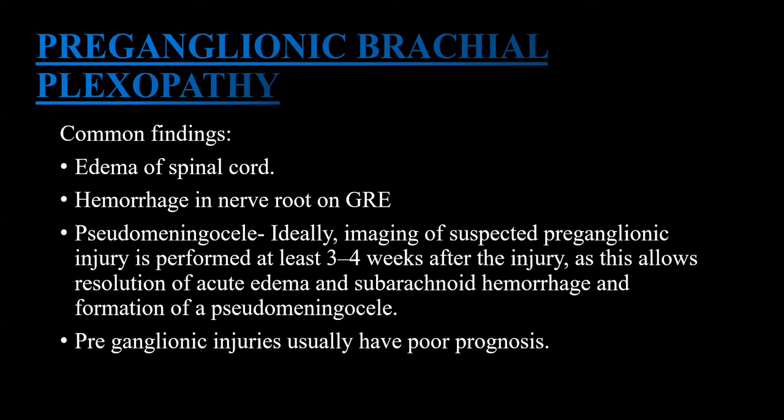Let's discuss pre-ganglionic brachial plexopathy. Common findings include edema of the spinal cord, hemorrhage in the nerve root on GRE, and pseudomeningocele. Pre-ganglionic injury usually has a poor prognosis. Ideally, imaging of suspected pre-ganglionic injury is performed at least 3 to 4 weeks after the injury, as this allows resolution of acute edema and subarachnoid hemorrhage and formation of pseudomeningocele.